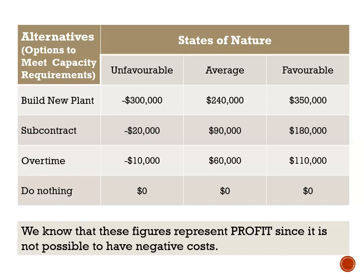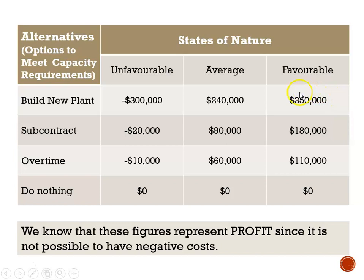So what this table is saying: if we choose to build a new plant and conditions turn out to be unfavorable, it will result in us losing $300,000. If conditions turn out to be average, the new plant will give us a profit of $240,000. And if conditions are favorable, the new plant will give us a profit of $350,000.